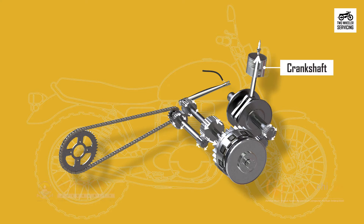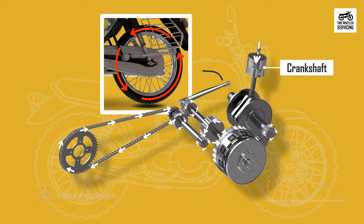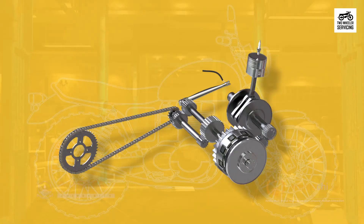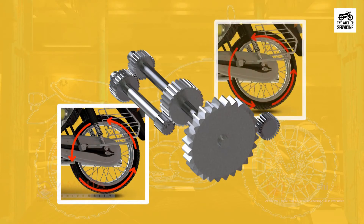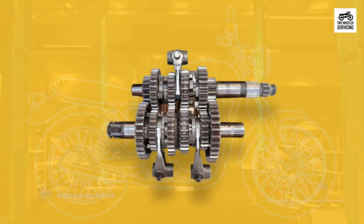The gearbox supplies the rotation to the chain, which in turn runs the rear wheel. A gearbox is a set of gears that enables a rider to move from a complete stop to a cruising speed. Inside the gearbox there are different gear ratios, which are engaged to increase or decrease the speed of the wheel. Gearboxes on motorcycles typically have four to six gears.